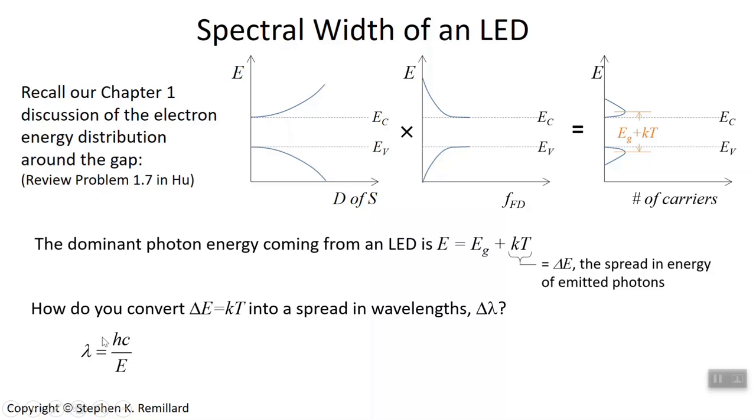So if I have delta E of kT, what's delta lambda? Is it hc over kT? No. Those are deltas, so take a derivative. You have dE by d lambda, and I say it's minus hc over lambda squared. Do you see that from this expression? If you take this expression and differentiate dE by d lambda, do you get that?